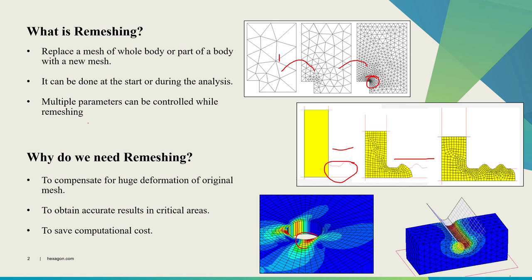Another reason to perform remeshing is to obtain accurate results in critical areas. In these areas there is a stress concentration, so we need finer mesh to capture that stress concentration accurately. And finally, to save computational cost as well. In remeshing, we don't necessarily always have to make mesh finer — sometimes we can make it coarser as well. So if Mark figures out this much fine mesh is not needed, then it can remesh, make the mesh coarser, and then simulation will run quicker.